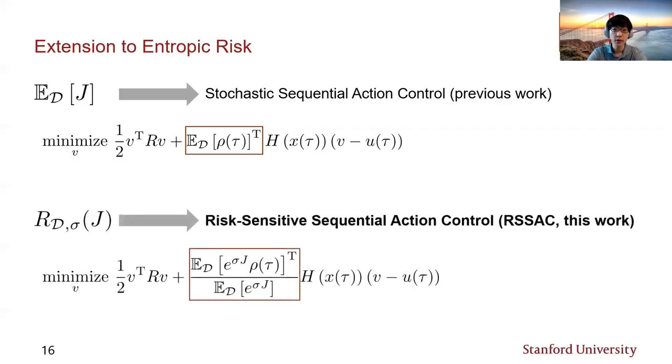In the present paper, we have extended the framework to the case of entropic risk and derived the new quadratic optimization formula, which is a novel contribution. We can see that this is a strict generalization of the stochastic SAC since setting sigma to zero recovers the same quadratic optimization problem. Due to the similarity of the new formula, we can still use the same algorithmic framework to perform online control perturbation.